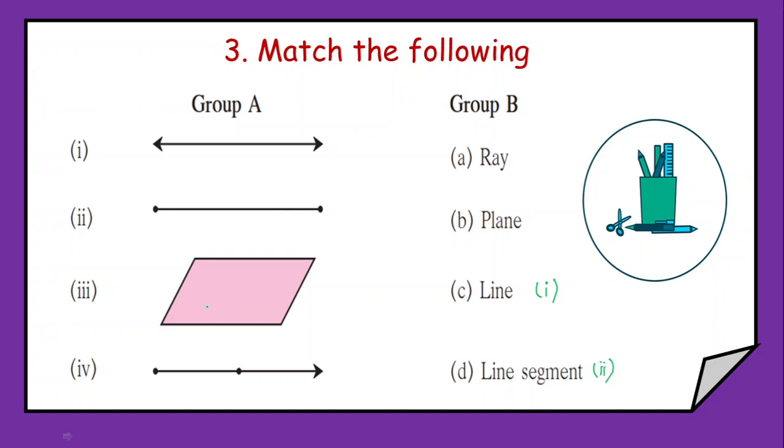Then third one is a plane. Yes, third one is going to be a plane. Fourth is having a dot at one end and arrow head at another end. So that is going to be a ray.